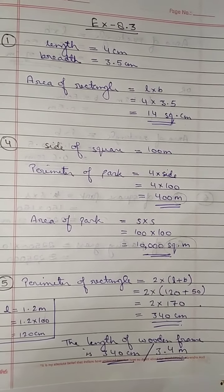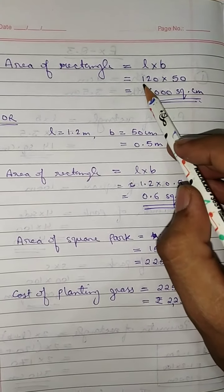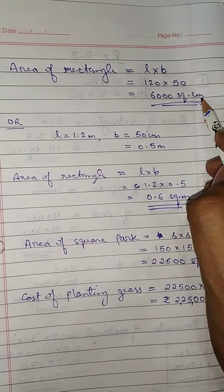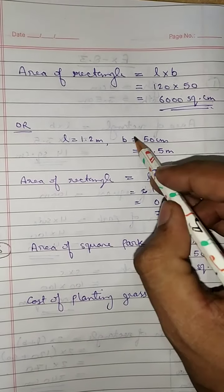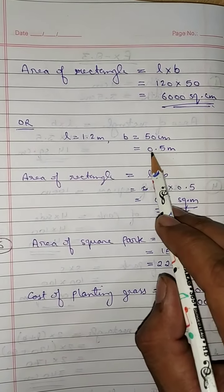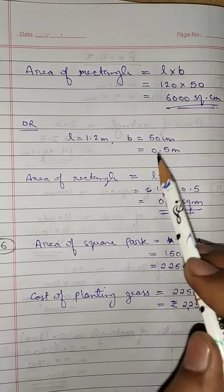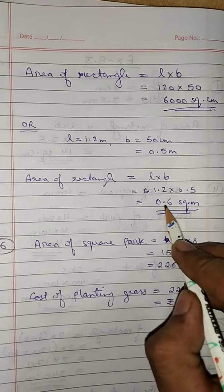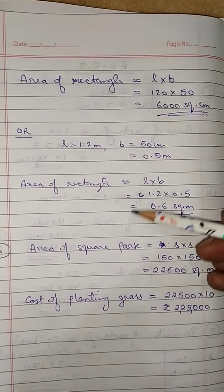This conversion you have already done in the measurement chapter. The area of rectangle is L into B — means 120 into 50 is equal to 6,000 square centimeter. If you convert the breadth into meter, then breadth will be 0.5 meter. Area of rectangle equals L into B: 1.2 into 0.5 is equal to 0.6 square meter. Both answers are correct — you can use either unit, that is your choice.